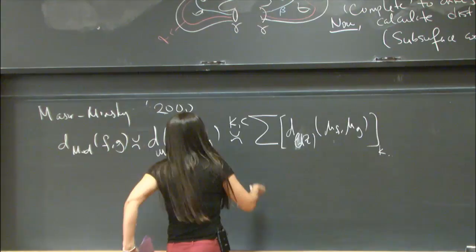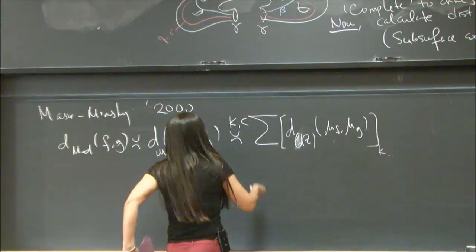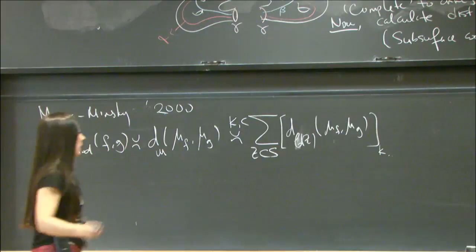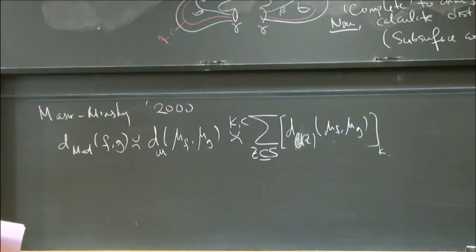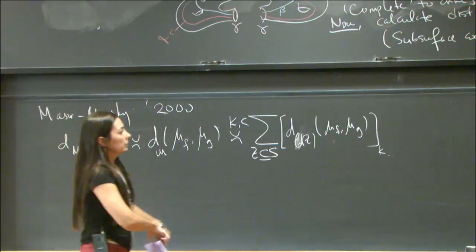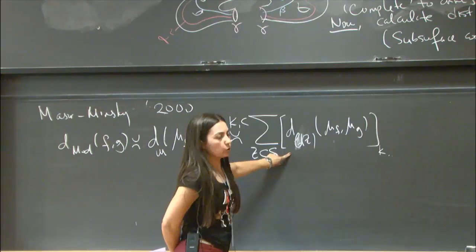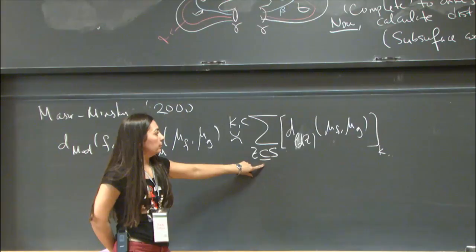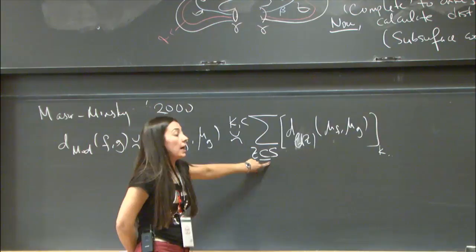Here, Z ranges over all subsurfaces, including S itself. For the Farey graph, this was exactly the number of edges and twistings. In the higher genus case, those twistings appear because of annuli, plus there are more complicated subsurfaces. That's the formula — the sum of subsurface coefficients above a threshold, up to multiplicative and additive constants.